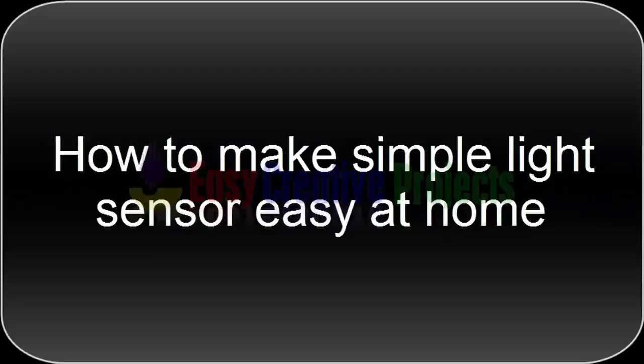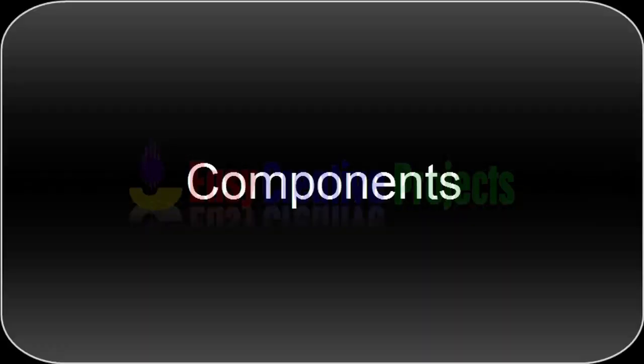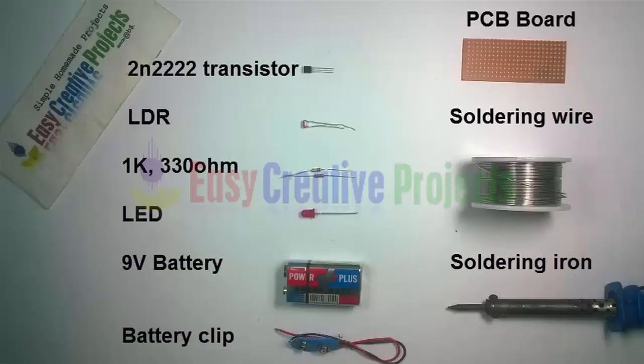Hello friends, today we learn how to make simple light sensor easy at home. For making this project we need some components: 2N2222 NPN transistor, LDR, 1K and 330 ohm resistor, LED, 9 volt battery, battery clip, PCB board, soldering wire, soldering iron.